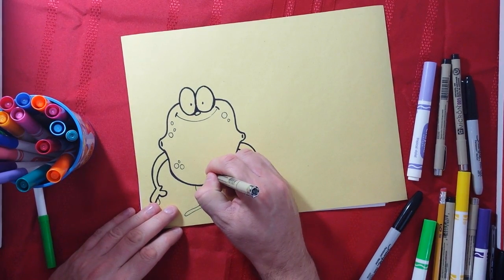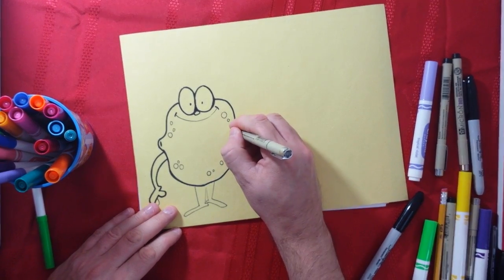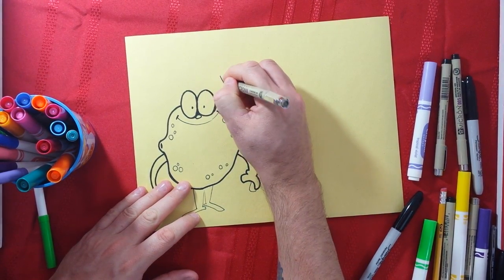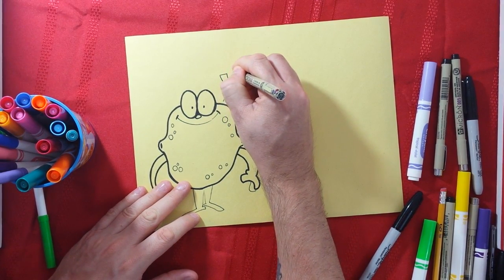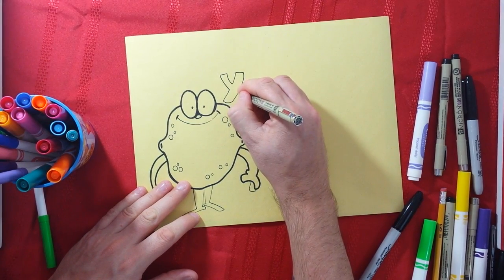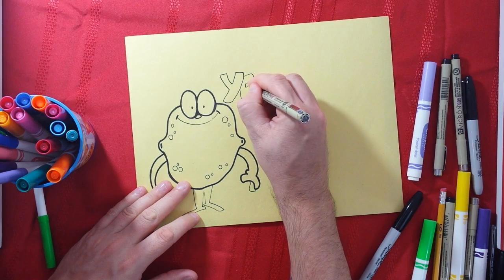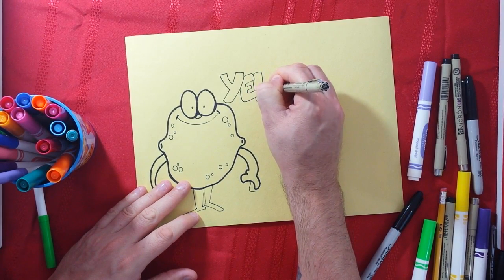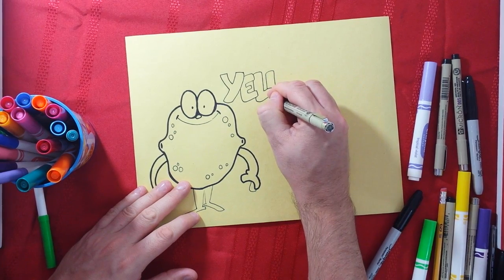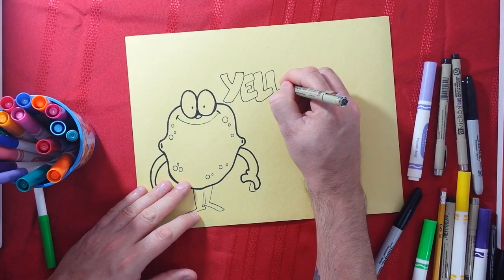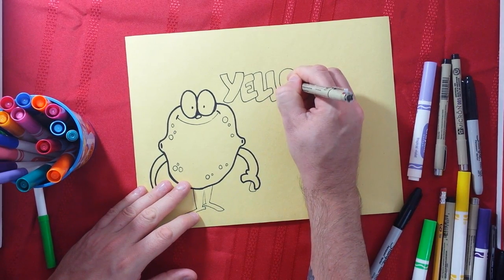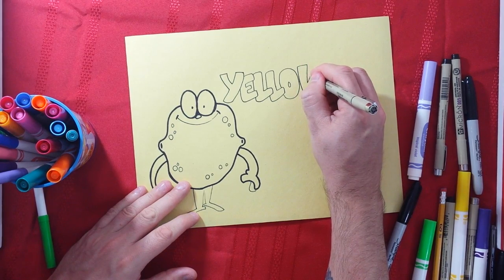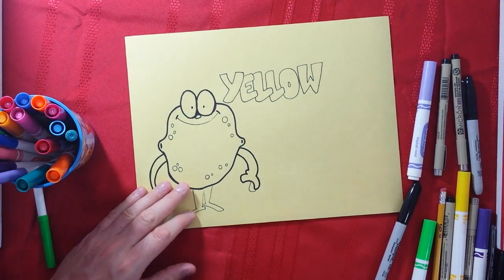We have our silly little lemon guy here who is the color yellow. By the way, the paper, you can see that at home, the paper is yellow too. So let's start with the letter Y, the letter E, yellow is the letter L, right, and then we have another L. So Y, E, L, L, O, W.